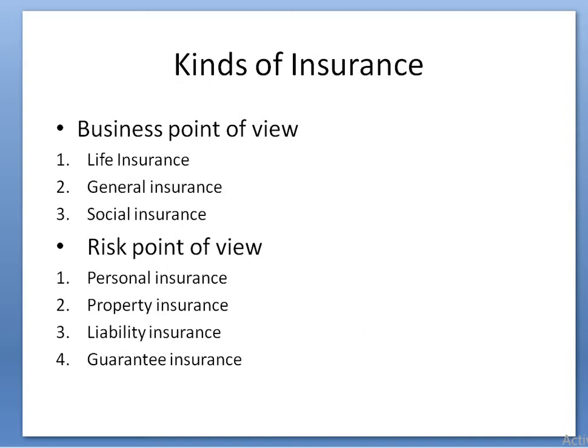The second risk category is property insurance. In this type of insurance, the property of an individual and of society is insured. Insurance policies covering fire and other perils fall under property insurance.